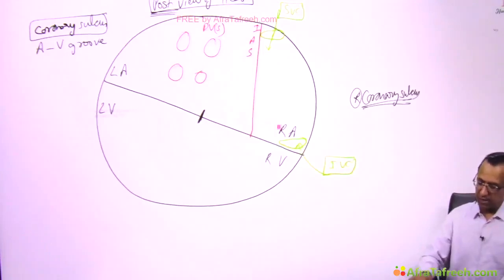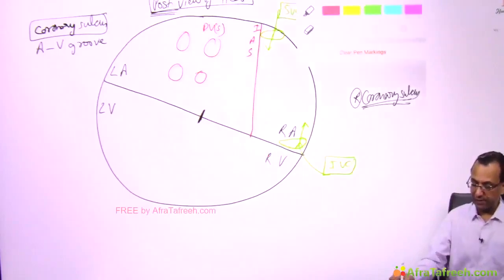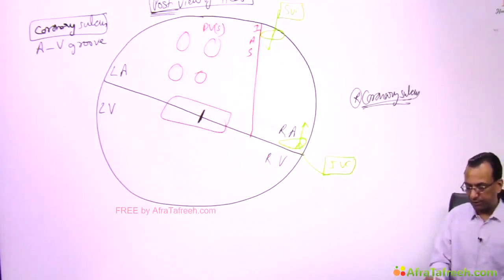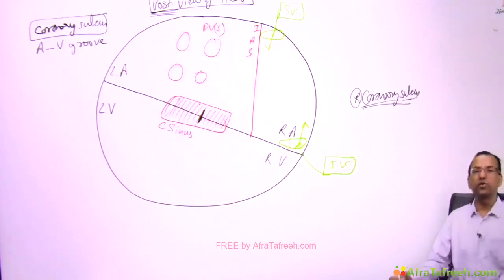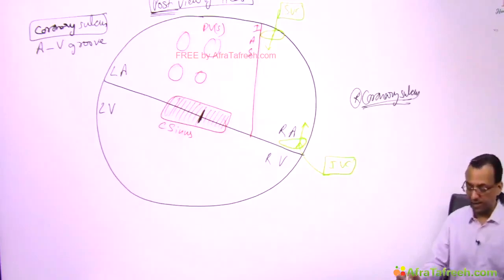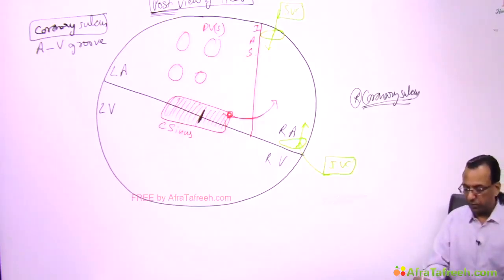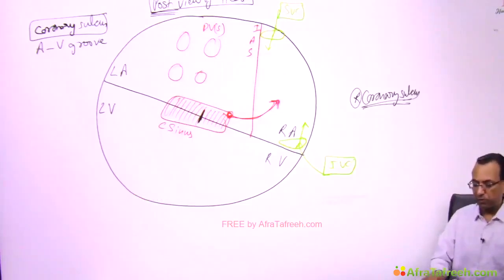The right atrium receives the superior vena cava from above, the inferior vena cava from below, and the coronary sinus. The coronary sinus sits in the coronary sulcus posteriorly, receives the venous blood of the heart, and drains into the posterior wall of the right atrium.